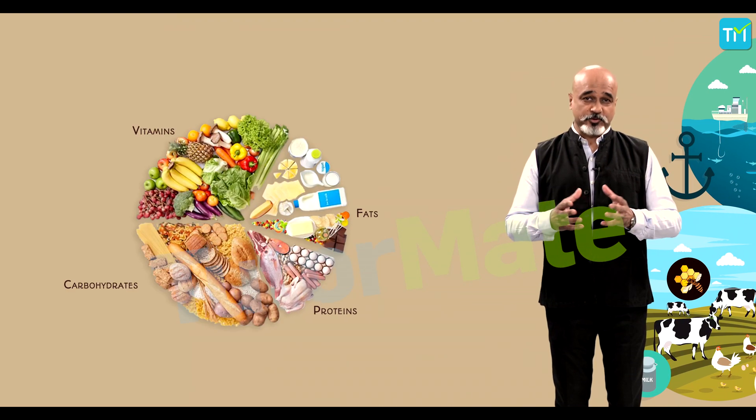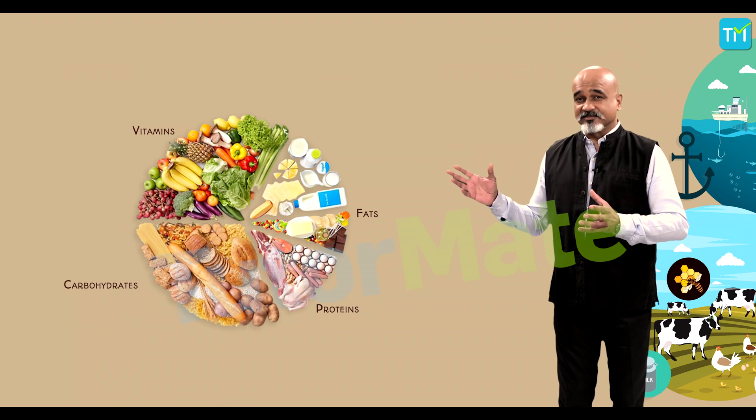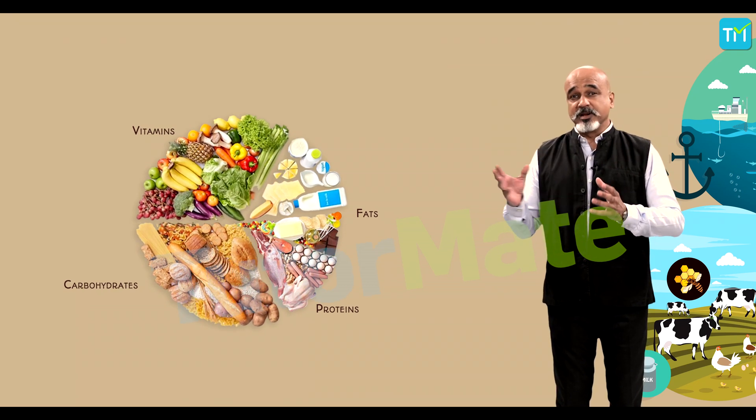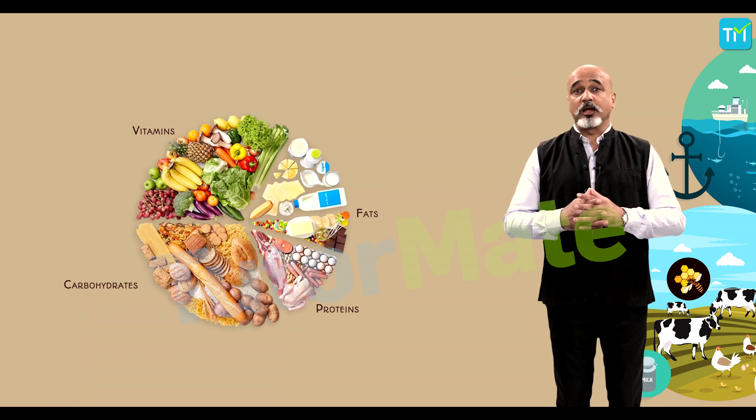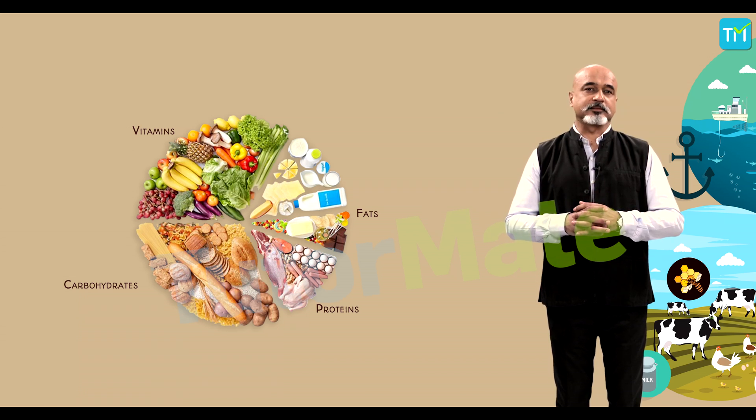We all know that living organisms' survival depends on various natural resources, and food is one of the most essential resources. Food supplies proteins, carbohydrates, fats, vitamins, and minerals — the five main nutrients we require for our development, growth, and health.